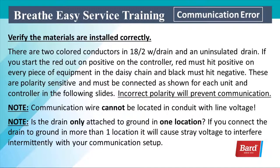There are two color-coded conductors in the 18/2 and an uninsulated drain. If you start out with red on positive at the controller, red must hit positive on every piece of equipment in the daisy chain, and black must hit negative. These are polarity-sensitive and must be connected as shown for each unit and controller. Incorrect polarity will prevent communication. Also note that communication wire cannot be located in the same conduit with line voltage, and the drain is only attached to ground in one location. Connecting the drain to ground in more than one location will cause stray voltage to interfere intermittently with your communication.